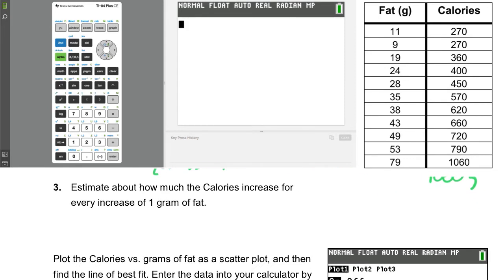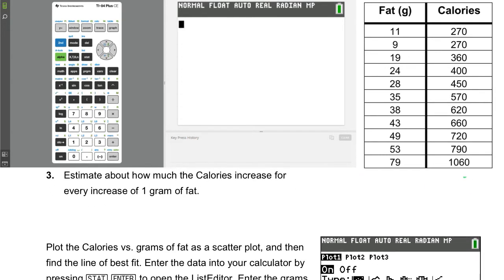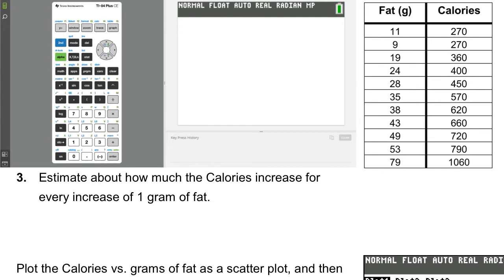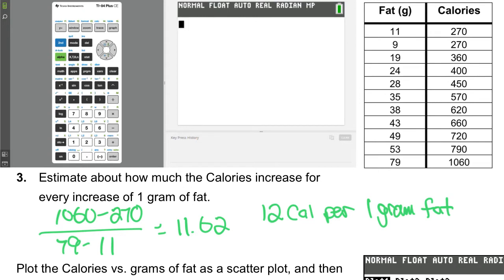Number three, let's estimate how much the calories increase for every one gram of fat. Now, one way that we could do this is we could calculate slope. We could just take two points, the first and the last, and calculate the slope between those two. And we end up with something around 12. Otherwise, you could think about going from, let's say, the second data point from 9 to 19. So, we're adding 10, and then to go from 270 to 360, we're adding 90. So that's maybe around 9 per gram of fat. Okay. Because it's changing by 10, and then it's changing by 90 for the calories. Okay.